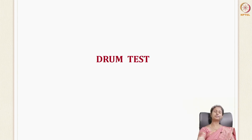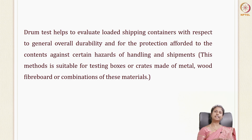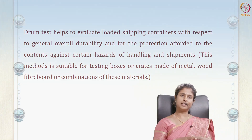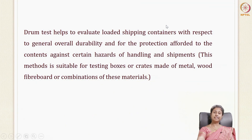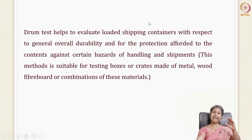Our next transport worthiness test is the drum test. The drum test is the name given to tests done for packages or shipping containers other than corrugated fiber boards — like metal crates, boxes, and wooden fiber boards. Whatever tests you do for corrugated fiber boards, such as stacking to see the effect on lower ones, the same things will be done for these containers, and those are known as the drum test.